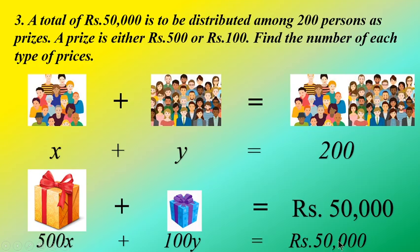Rupees 50,000 is distributed such that one set of people gets a prize of rupees 500 and another set of people gets a prize of rupees 100. So rupees 50,000 is distributed in this way.